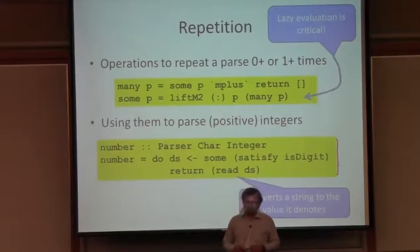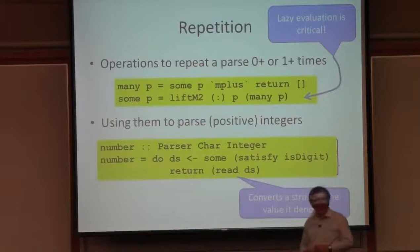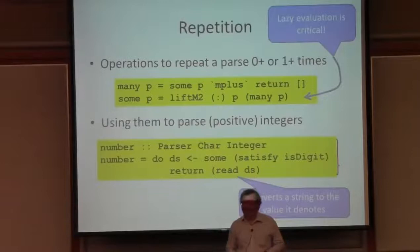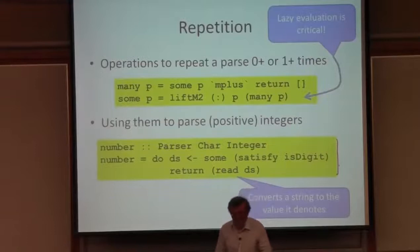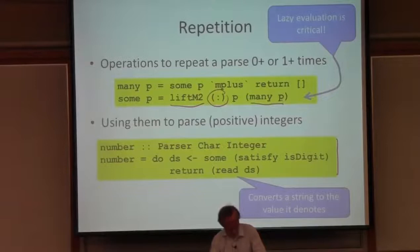Haskell's lazy evaluation is really critical here. Assume that we were not using a lazy language and look at the definitions of many and some: many calls some, some calls many — so that would immediately be an infinite loop. But in Haskell, the cons operator is lazy, particularly in its second argument, and liftM2 preserves that laziness, which means that some P can deliver results without actually evaluating that recursive call of many P. So in Haskell this is a perfectly terminating program, but it would be an infinite loop without laziness.